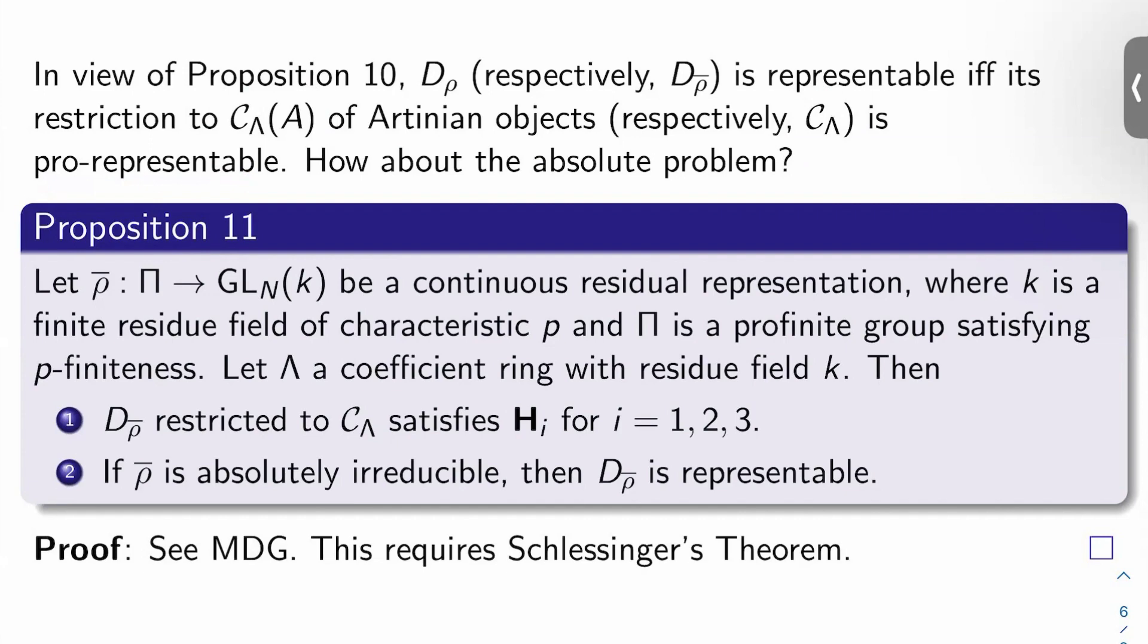So let's look at proposition 11 here. We'll let rho bar now from pi to GLN of K, so we're all the way down at the base field here, be a continuous residual representation, where K is a finite residue field of characteristic P and pi is a pro-finite group satisfying P finiteness. Let lambda be a coefficient ring with residue field K. Then two things are true: D sub rho bar restricted to C lambda does satisfy HI for I equals 1, 2, and 3.